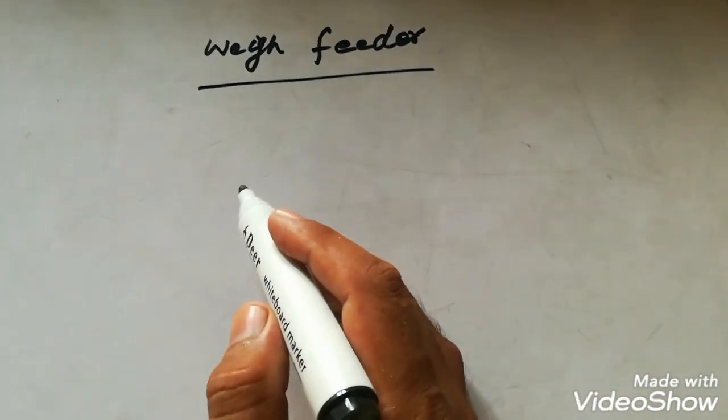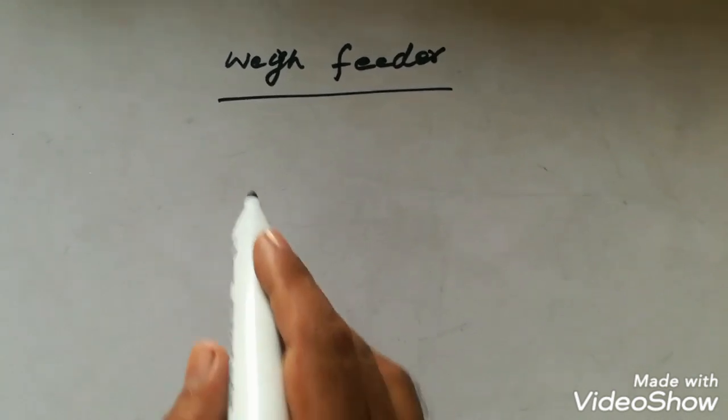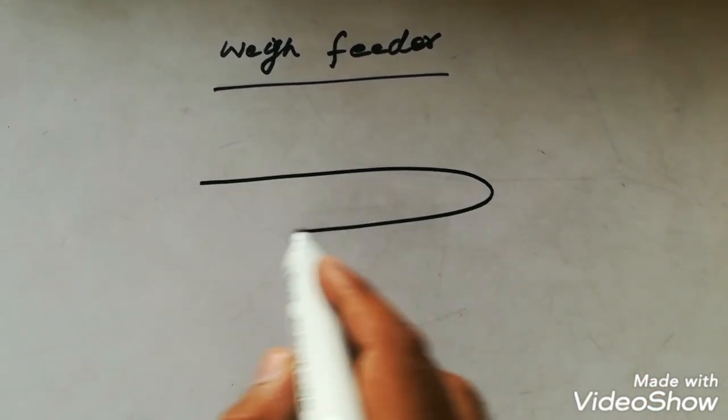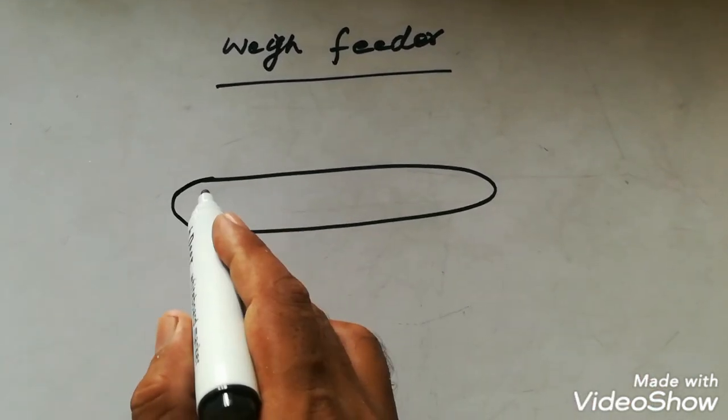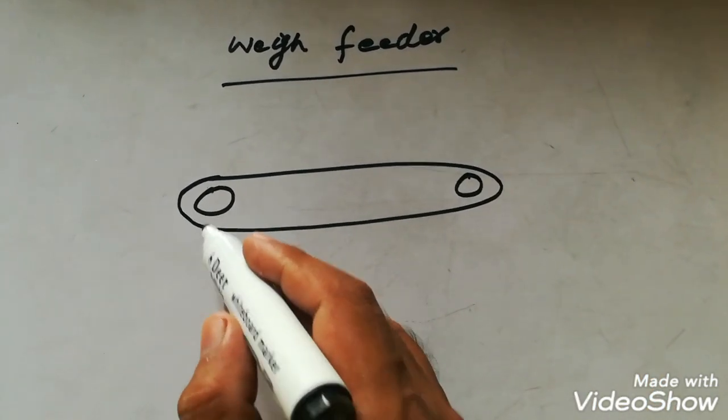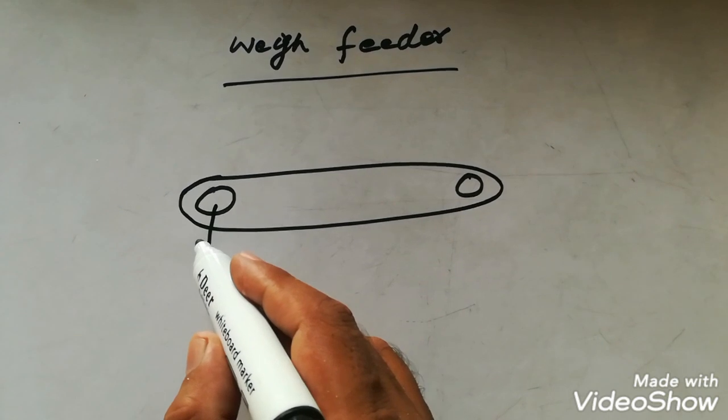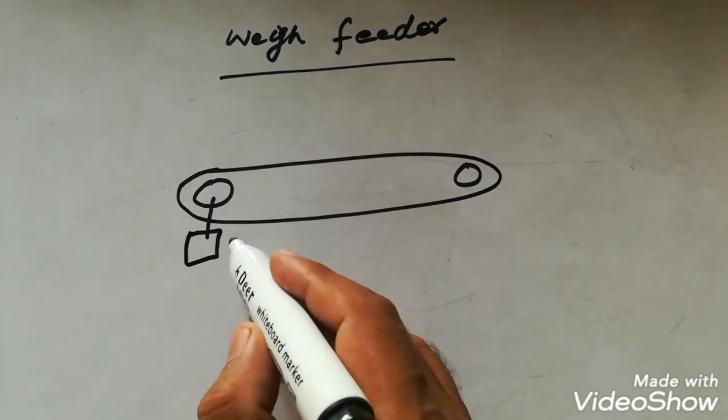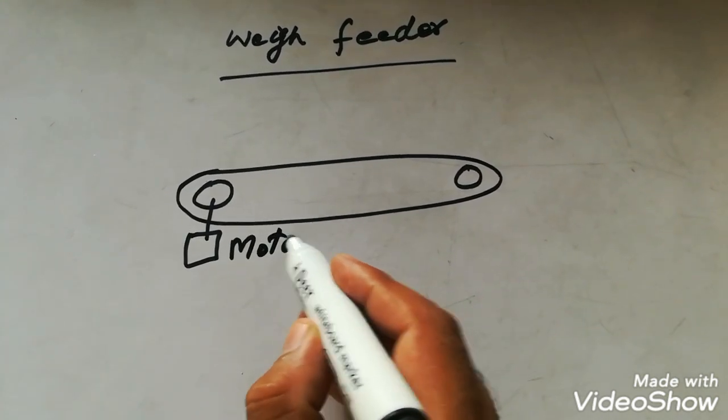As per hour set point, so if we give the set point of 10 ton or 20 ton per hour, it will give the material 20 ton in 1 hour. It will control the speed of the belt according to our weight.